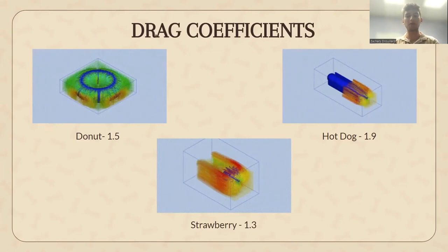As can be seen, the strawberry ranked the lowest, followed by the donut, and then the hot dog having the highest drag coefficient. Multiple implications arise from these results. If a food has a higher drag coefficient, that means that it will encounter a higher drag force and decelerate it to a greater extent than one with a lower drag coefficient.